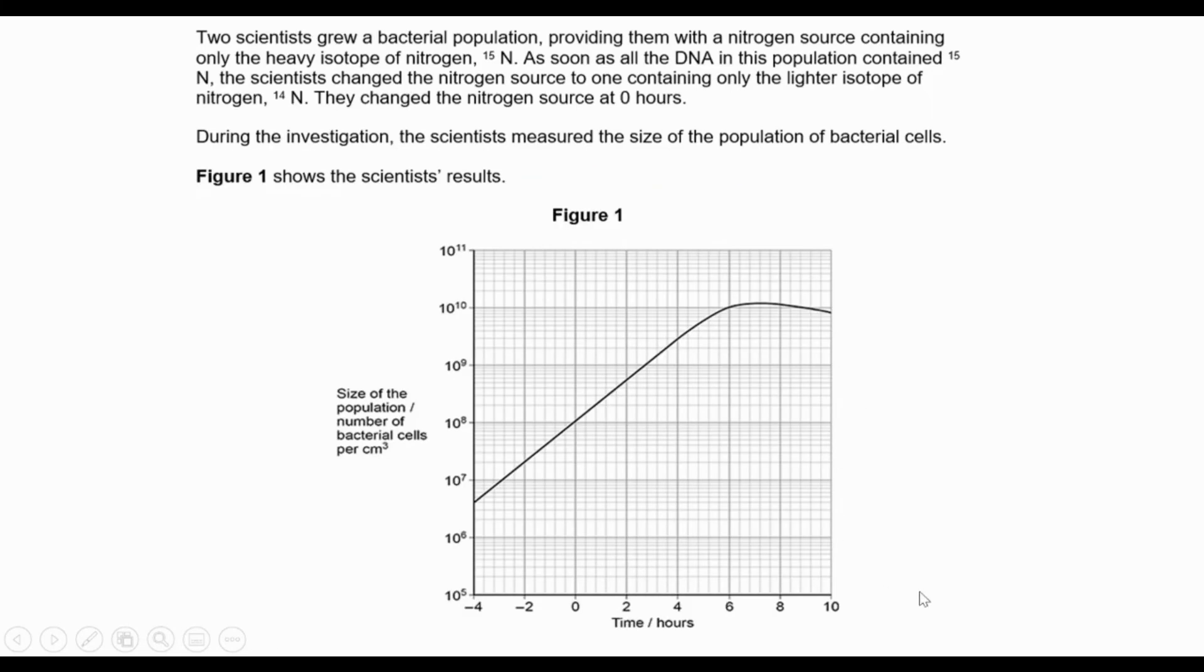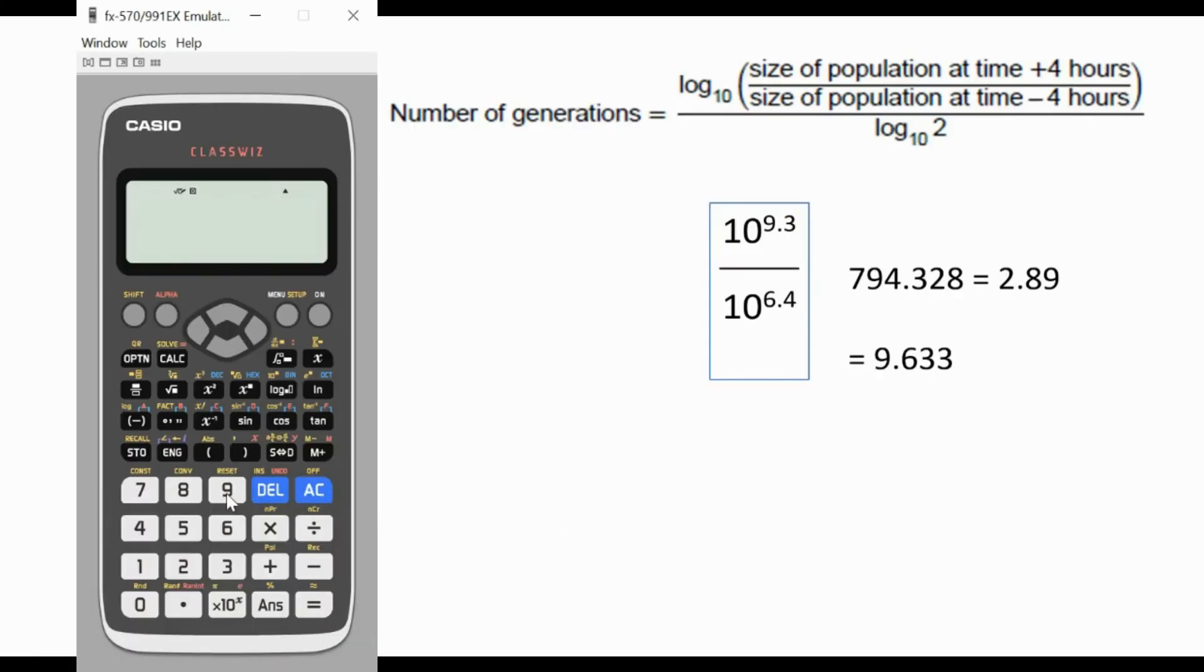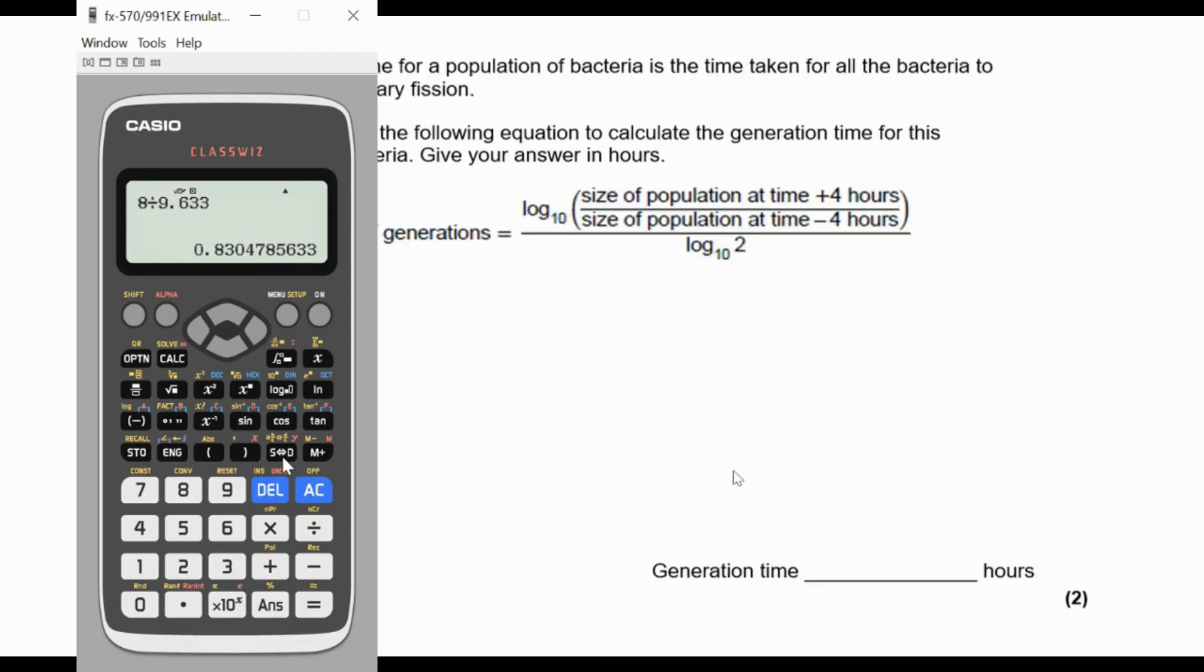We've got to look at the number of hours. Well, it's actually eight hours, from minus four to four, so that is eight hours. What you have to do is eight divided by 9.633, and that gives us the answer 0.83. So there we go, generation time in hours is 0.83. Hope you found that useful.